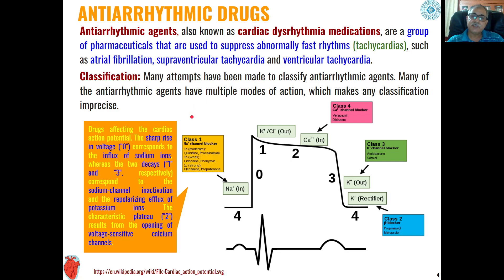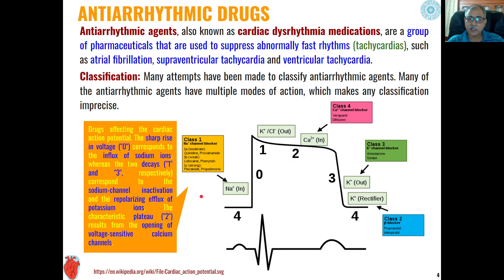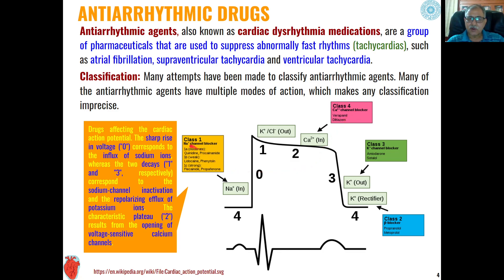There are many classifications available for anti-arrhythmic agents depending upon their mode of action. The drugs affecting the cardiac action potential affect various types of channels — sodium channels, potassium channels, and calcium channels. Depending upon the kind of channel blocked, these have been classified into Class 1, Class 2, Class 3, or Class 4.